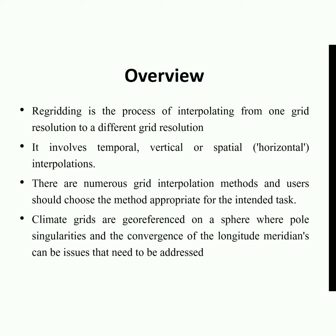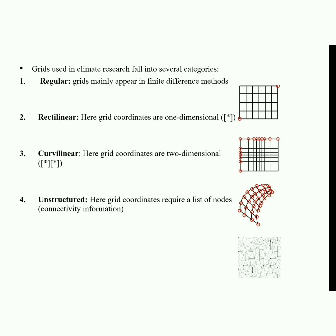Climate grids are georeferenced on a sphere where the pole singularities and the convergence of the longitude meridians can be issues that need to be addressed. There are different kinds of datasets which follow grids in climate research. Grids used in climate research fall into several categories: regular, rectilinear, curvilinear, and unstructured.